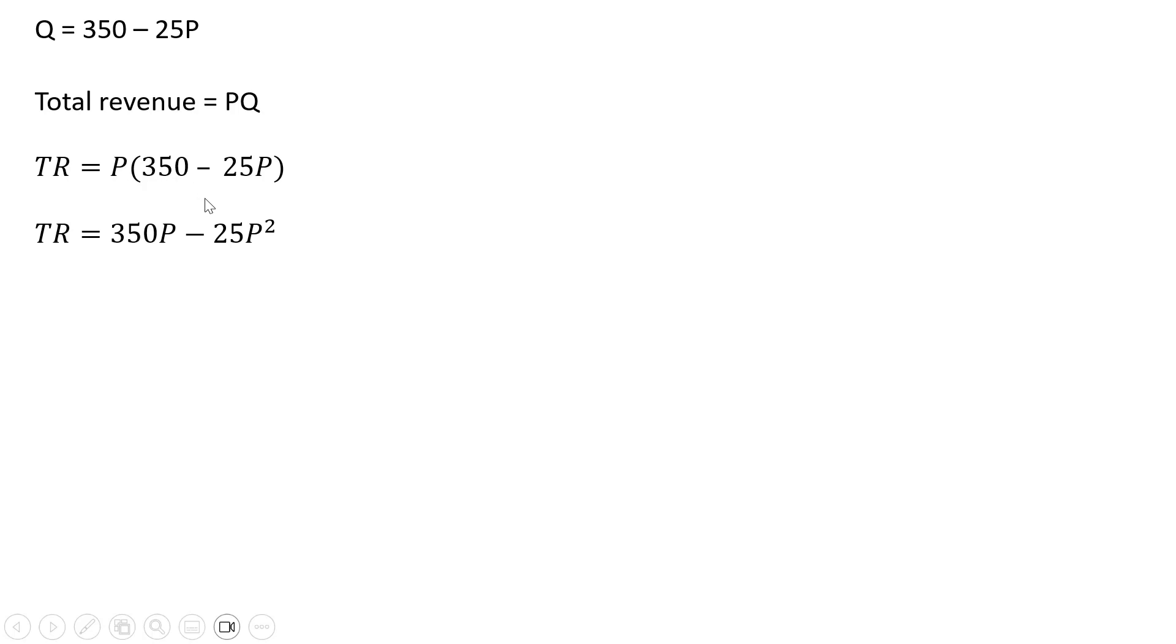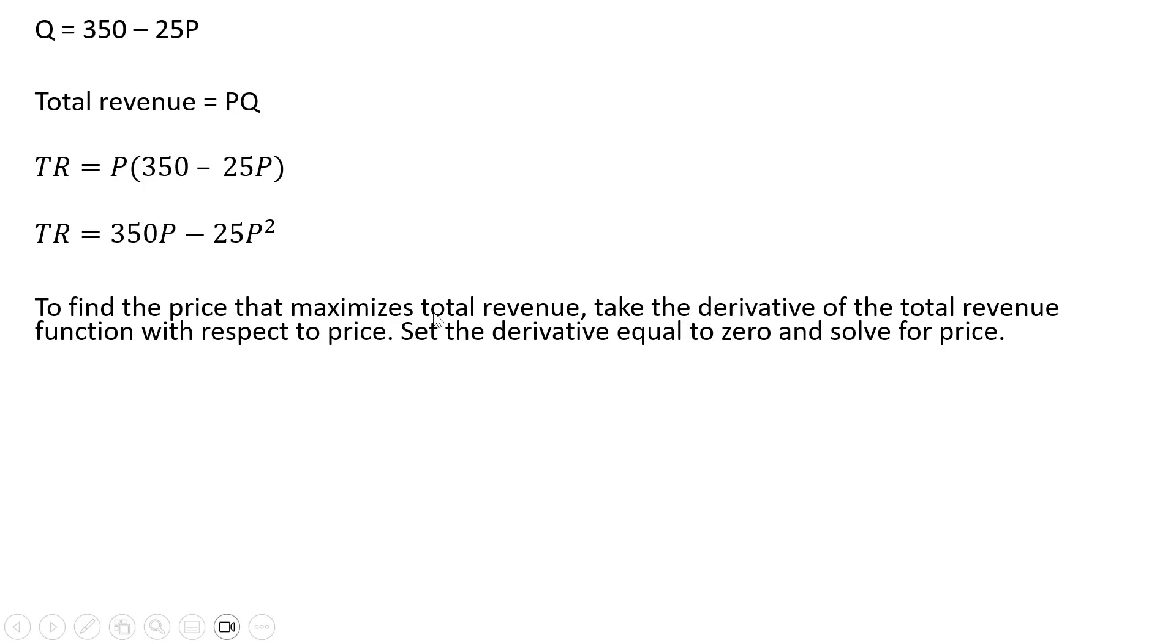Multiplying through by P here. And now to find the price that maximizes total revenue, we can take the derivative of the total revenue function with respect to price, set that derivative equal to 0, and solve for price.